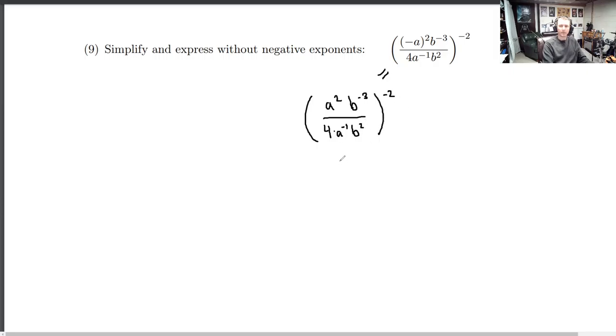Okay. There's nothing to combine on top. There's nothing to combine on bottom. But between the two, there are things that are similar. So let's use some of our cancellation properties there. I'm comparing these values, and I see that this negative 1, we're going to bring it up. So this is a squared times a to the first.